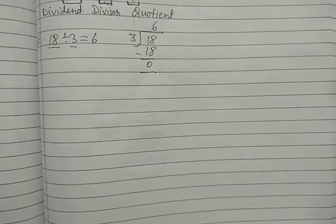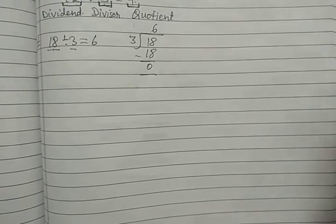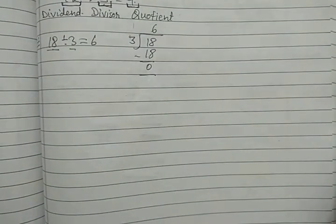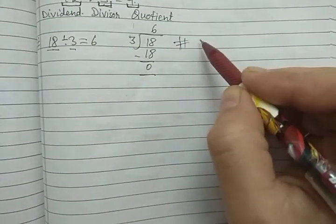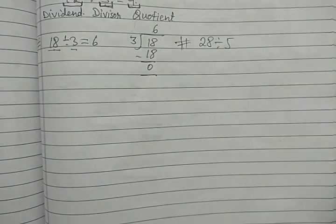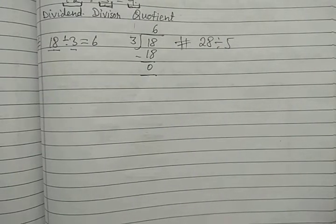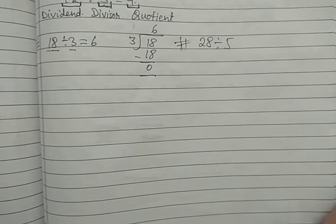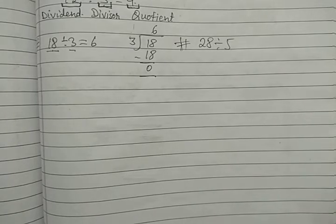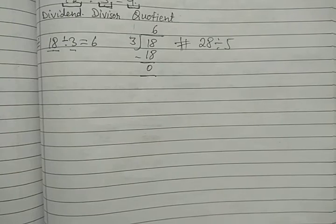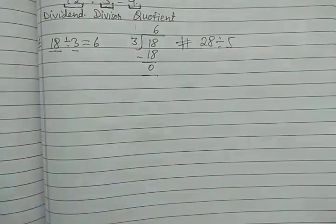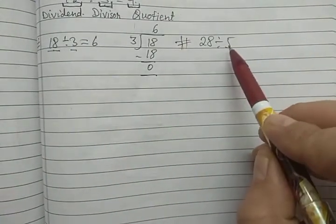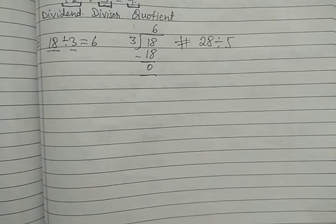Now let us take a bigger example — where the number is not directly found in the multiplication table. For example, 28 divided by 5. How can you divide it using the multiplication table? It is very difficult because 28 does not come in the 5 times table. 5 fives are 25 and 5 sixes are 30. So in this case you can't directly write the quotient. Here we have to use the long division method.